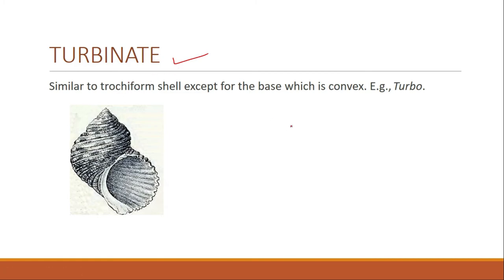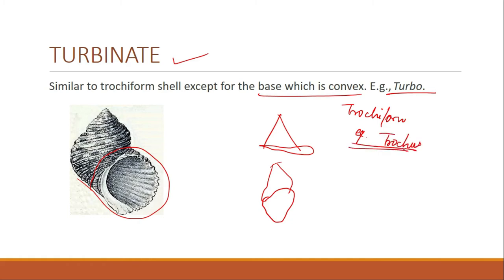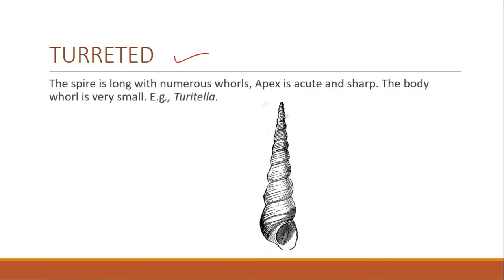The next shell form is turbinate, which is somewhat similar to trochiform — the spire is acute and sharp and almost conical. The only difference between turbinate and trochiform is that the base of trochiform is flat, but the base of turbinate is convex. The example for turbinate is Turbo, and the example for trochiform was Trochus.